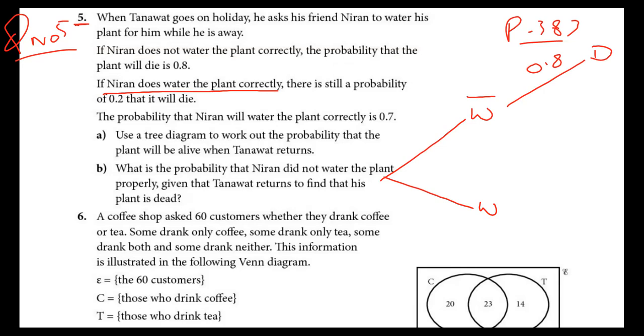So naturally, this is called not die. The most important line here: the probability that Niran will water correctly is 0.7, so correctly is 0.7. So I can say here 0.7. And when we have one branch, how to find the second branch? One minus the other one, so here I got 0.3.